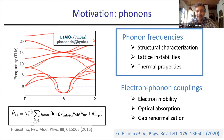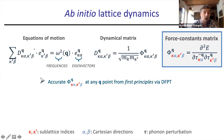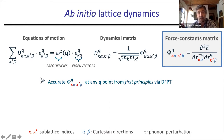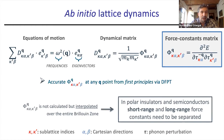Phonons can be calculated very accurately via density functional perturbation theory. We have the equations of motion given in terms of the dynamical matrix, which in turn can be calculated via the phonon perturbation — called the force constant matrix. Here I'll use the notation where k and k-prime are sublattice indices, alpha and beta and the rest of the Greek alphabet are Cartesian directions, except tau which is a phonon perturbation.